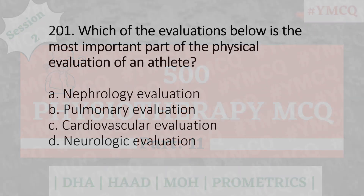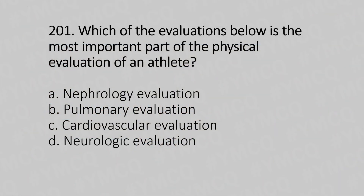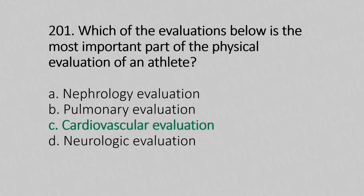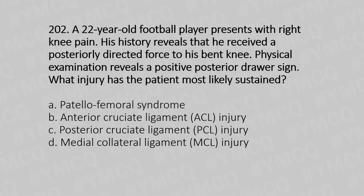Question 201: Which of the following evaluations is the most important part of physical evaluation of an athlete? Option A: Nephrological. Option B: Pulmonary. Option C: Cardiovascular. Option D: Neurogenic. The answer is Option C: Cardiovascular.